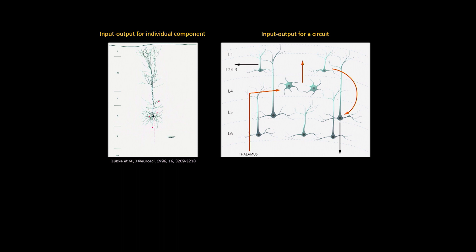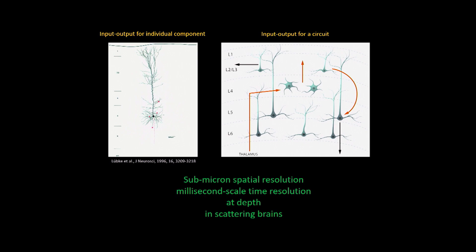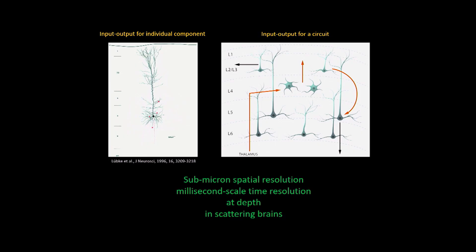For imaging methods, we would like to have submicron spatial resolution, because that is the size of individual synapses — the connections between neurons. But we also want millisecond-scale time resolution, because that is how quickly neural signals happen in the brain. We want to image all those processes at depth, because brains are three-dimensional, rather thick structures, which in living brains are also scattering.